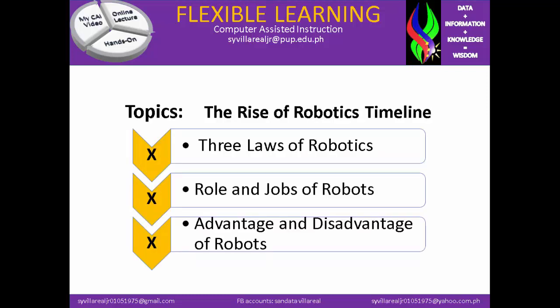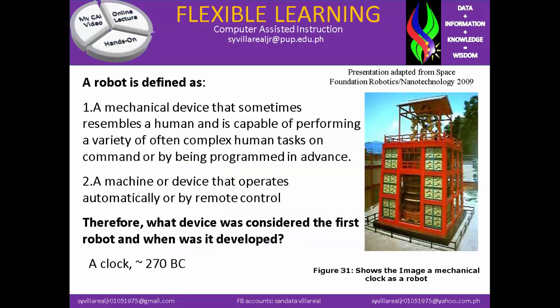Right here is the Rise of Robotics Timeline, and we have three subtopics: the three laws of robotics, the role and jobs of robots, and the advantage and disadvantage of robots. Figure 31 shows the image of a mechanical clock as a robot. It identifies that it was the first created robot in 270 BC. A robot is defined as a mechanical device that sometimes resembles a human and is capable of performing a variety of often complex human tasks, on command or by being programmed in advance. It is also a machine or device that operates automatically or by remote control. The figure is presented adapted from Space Foundation Robotics Nanotechnology in the year 2009.